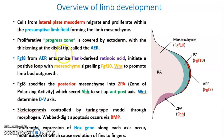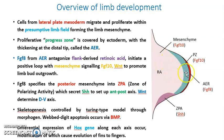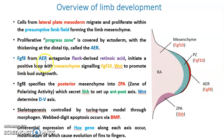These mesenchymal cells proliferate and form a protrusion covered by ectoderm, with a thickening at the distal tip called the AER, or apical ectodermal ridge. In this figure of a limb, we can see the protrusion and the AER at its distal tip.